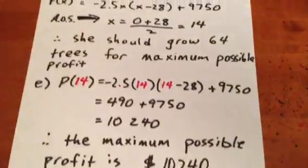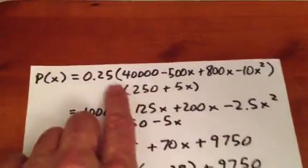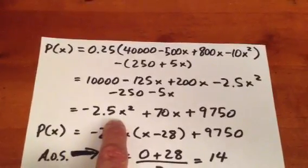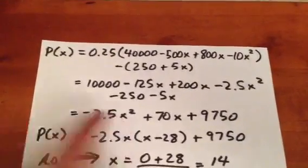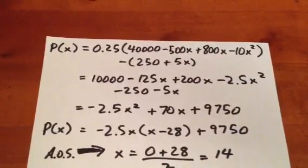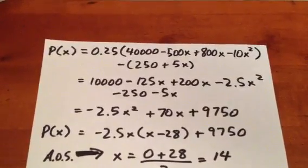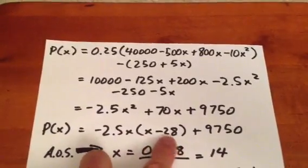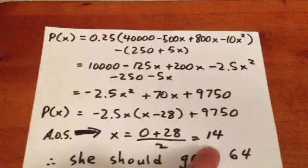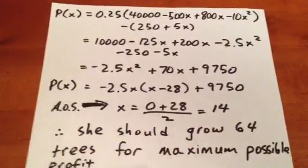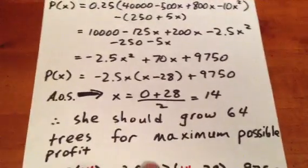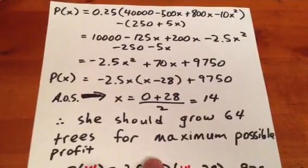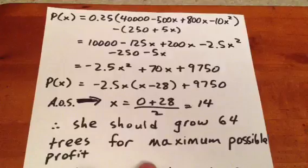Now this, when we expand it all out and collect like terms, is a downwards opening parabola. To determine the X value of the vertex, in other words, the X value that provides the maximum possible profit, we engage partial factoring. Right here. And we get an axis of symmetry at X equals 14. So that means if she actually wants to maximize her profit, instead of growing 15 additional trees for a total of 65, she only needs to grow 14 additional trees for a total of 64.